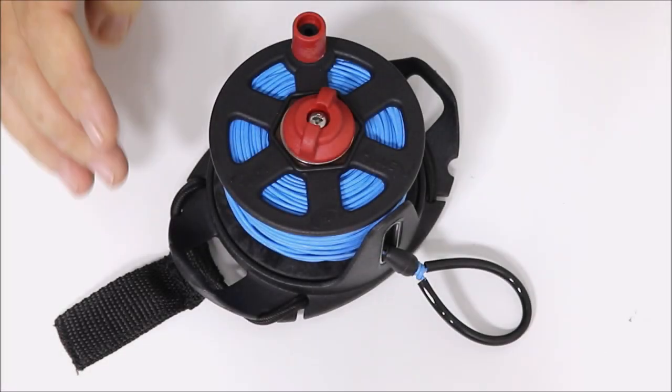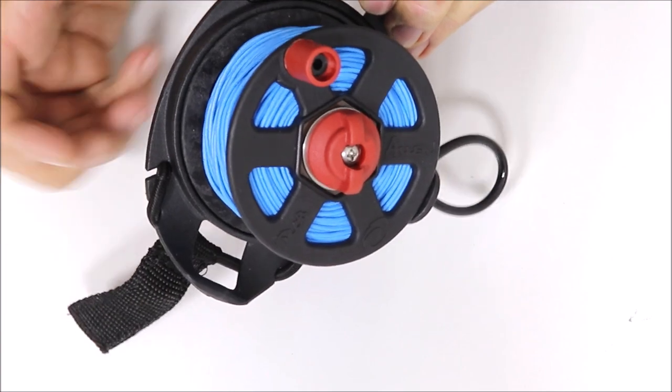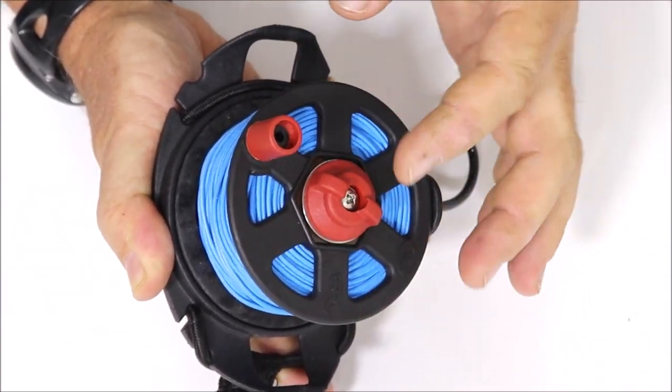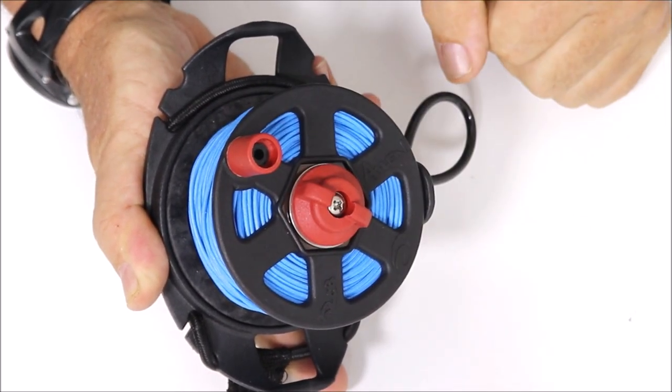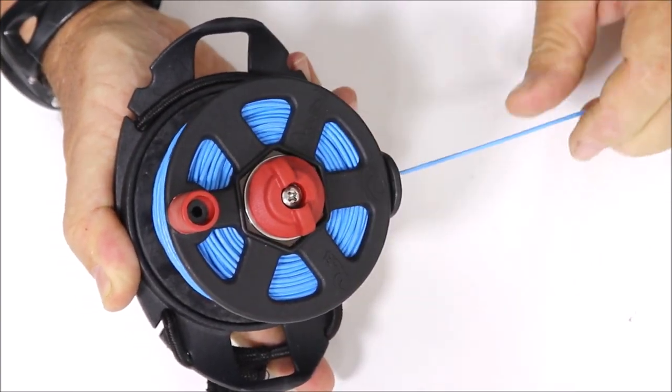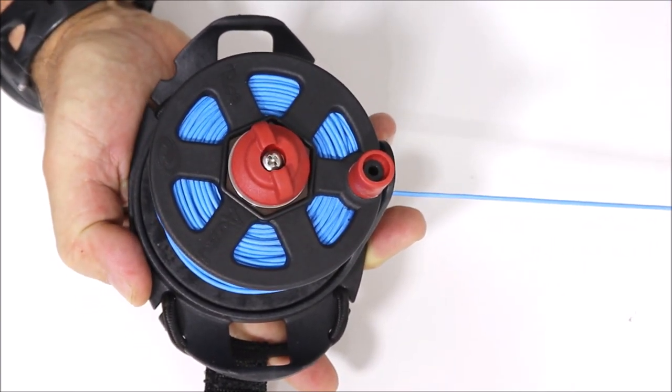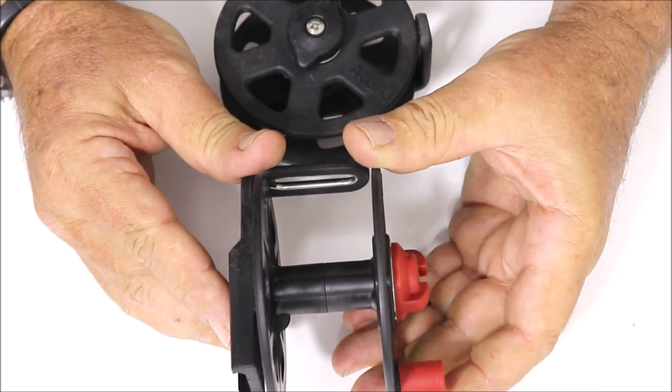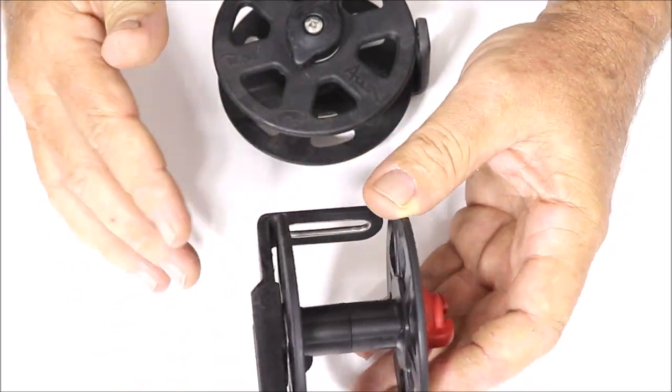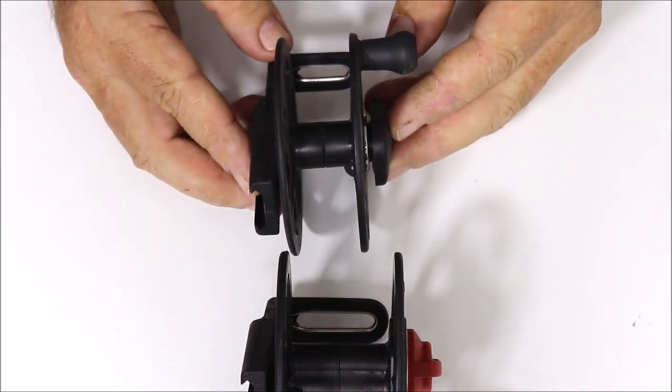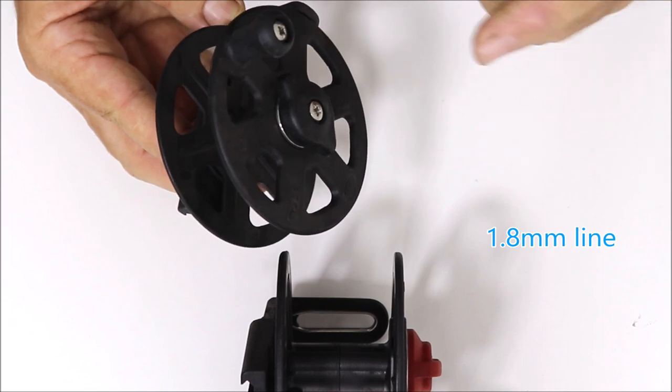Belt reels are now also available in the new drag nut system, along with the lower profile winding handle, much easier to control than before. The standard reel takes 60 meters, and is also now available in a smaller version that will take 40 meters, also available with the new handle and drag nut.